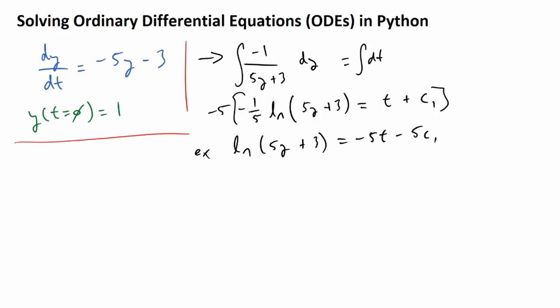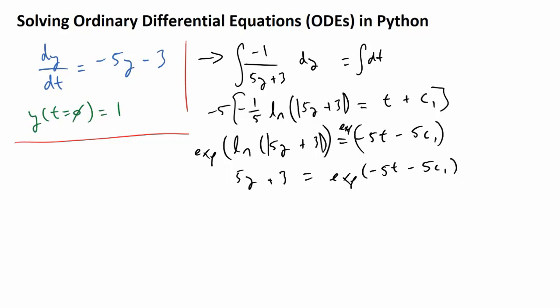Now I'm going to take the exponent of both sides of this equation, and to be a good mathematician I'm going to provide absolute value signs. We're basically taking the exponent of both sides, and what we'll see is that the left side becomes (5y + 3), equal to e^(minus 5t minus 5c1). Calling the rules for exponents — when you have two parameters inside the exponent argument with a subtraction operation, you can split it as division. So the right side becomes e^(minus 5t) times 1 over e^(5c1), still equal to (5y + 3).